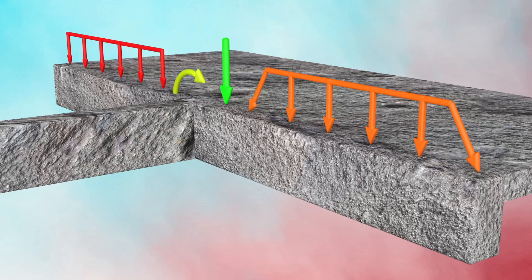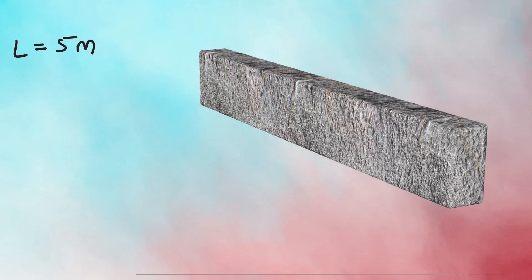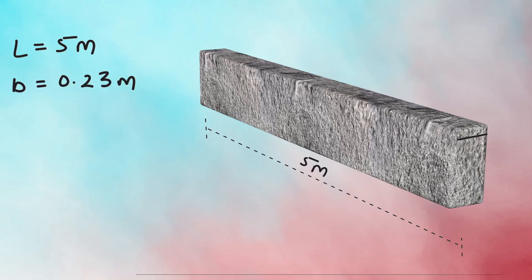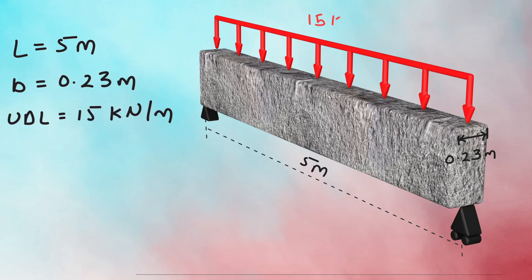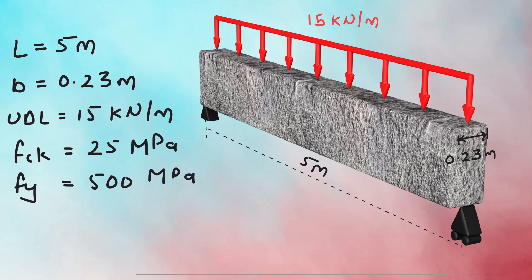Using IS 456-2000, we will design the beam ensuring that it is safe under these loads. Let us assume the beam is 5 meters long and 230 mm wide, simply supported on both ends and subjected to a load of 15 kN per meter. The grade of concrete is M25 and the grade of steel is Fe 500.